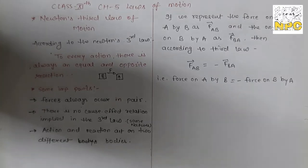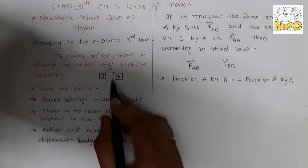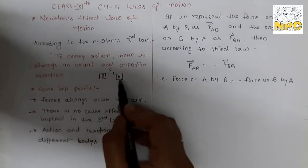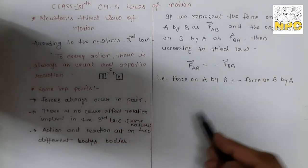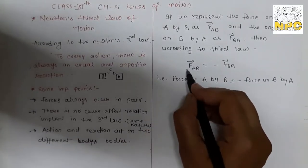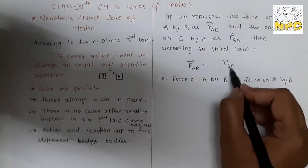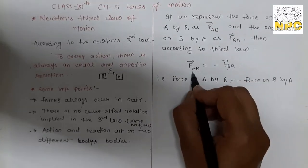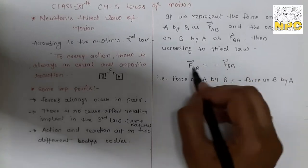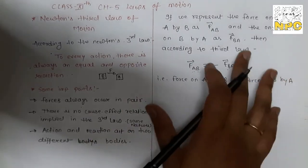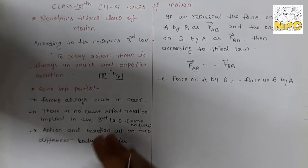Let's look at a simple example of Newton's third law. We have two bodies A and B. FAB is the force on A due to B, and FBA is the force on B due to A. According to Newton's third law, these forces are equal in magnitude but opposite in direction, so we assign a negative sign to show the opposition.